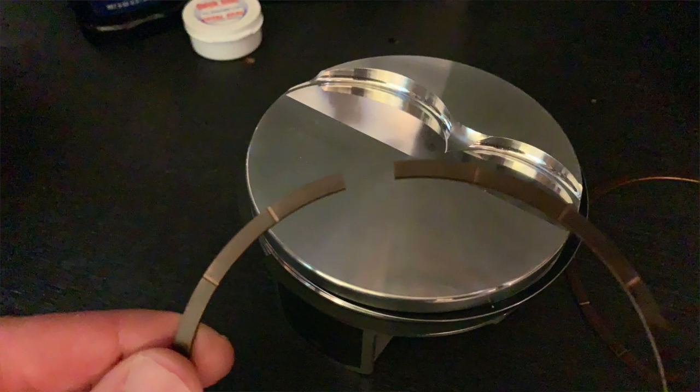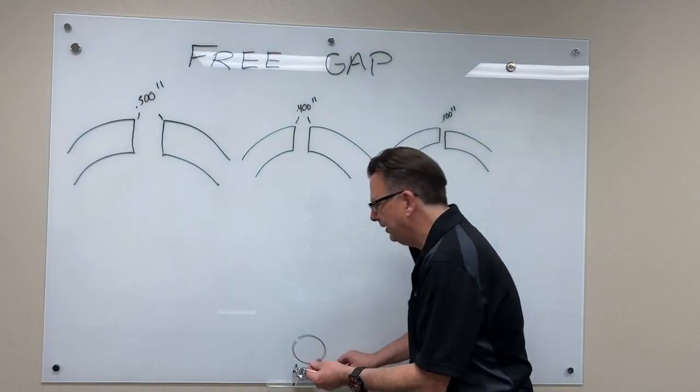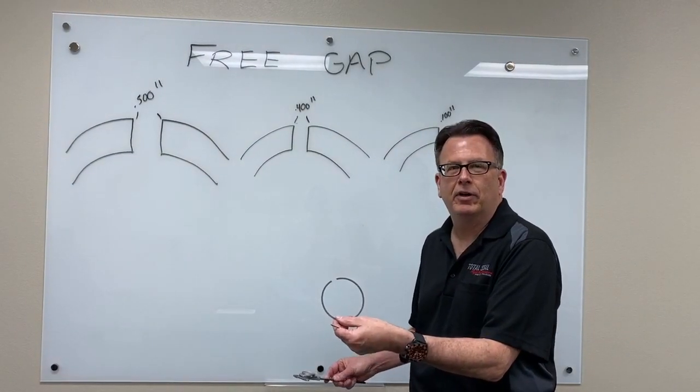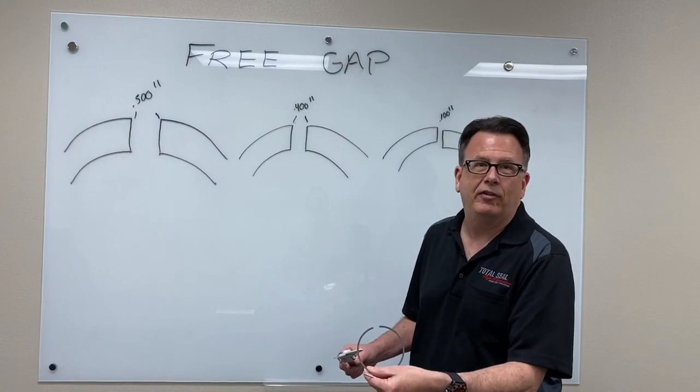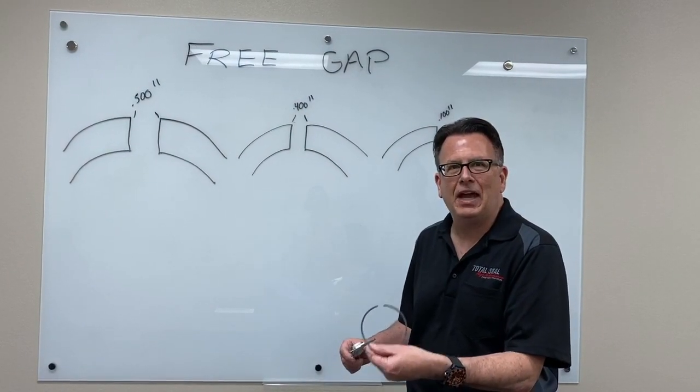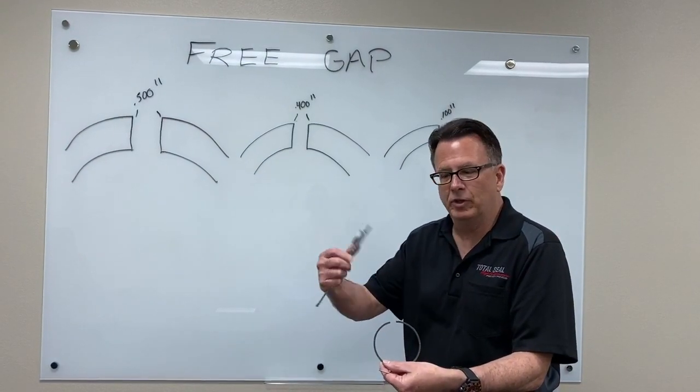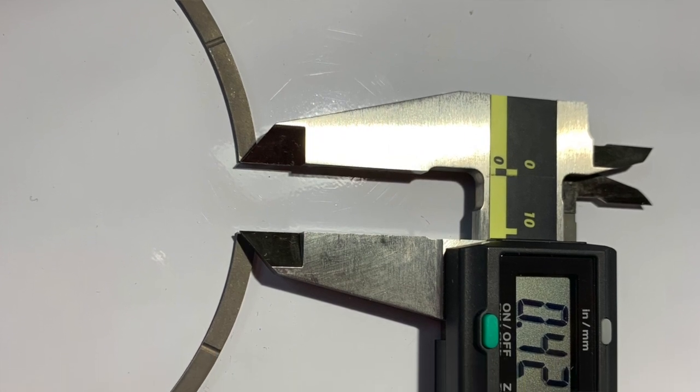And that's the gap of the piston ring before you put it in the engine. Let me use this sample right here. This is one of our new gas-ported top rings, which works really great by the way. It's already been file fitted. And one of the things you want to record in your build book is how much gap does that ring have before I install the engine. So simply take your caliper, check that amount of gap.